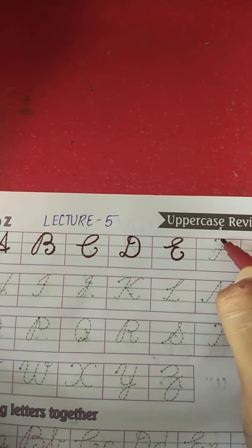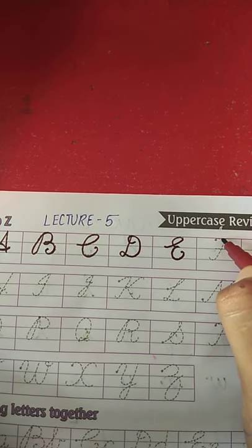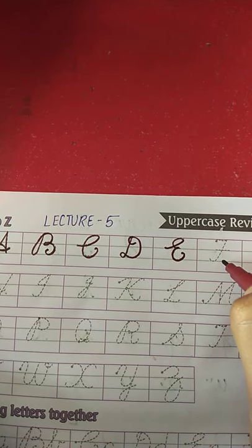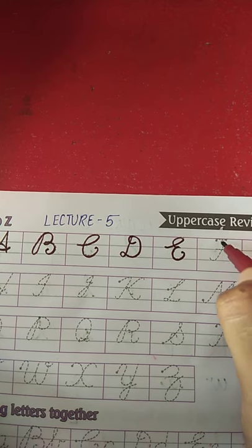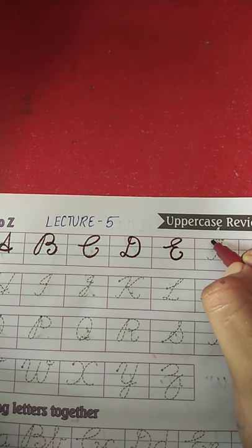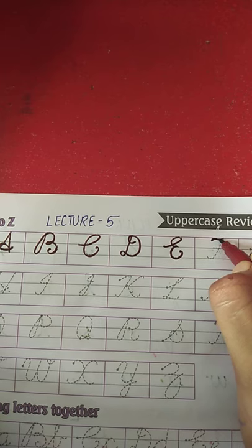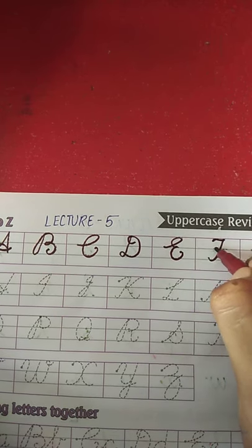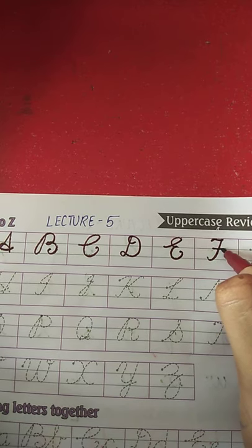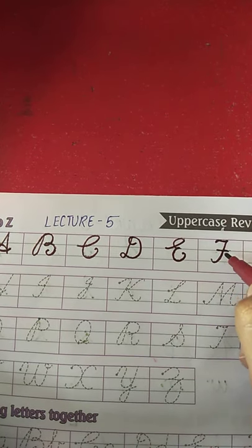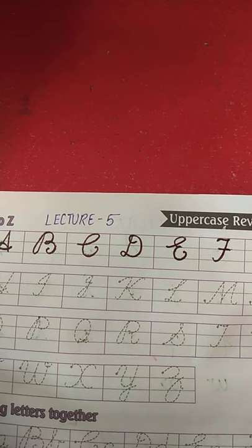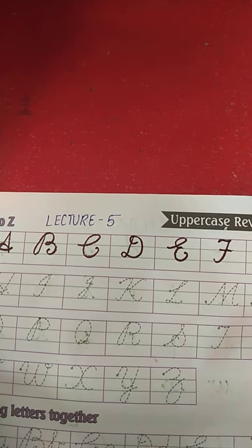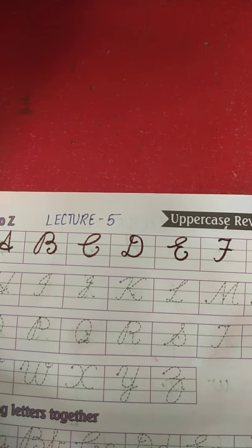E for elephant ke baad kya aata hai? F — F for fish. Now draw F for fish: put your pencil on the dot and draw a curve, a slanting line, and a sleeping line on the first blue line. What is the spelling of fish? F-I-S-H. Fish.